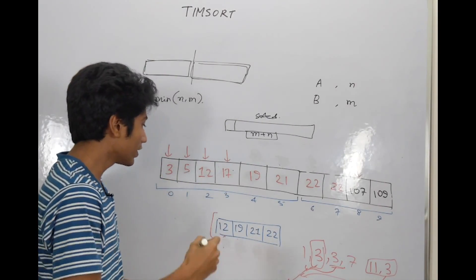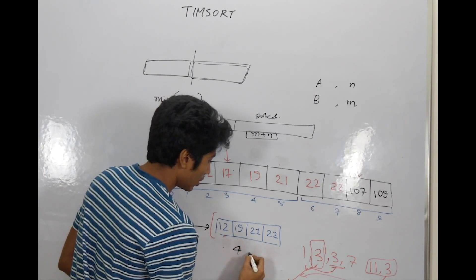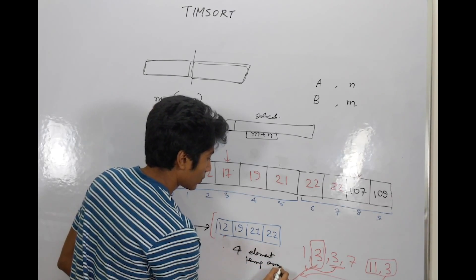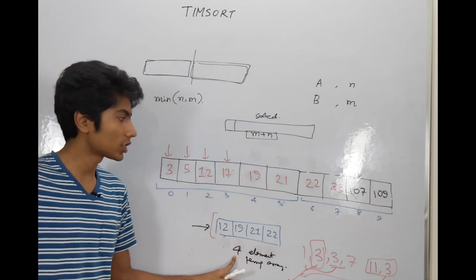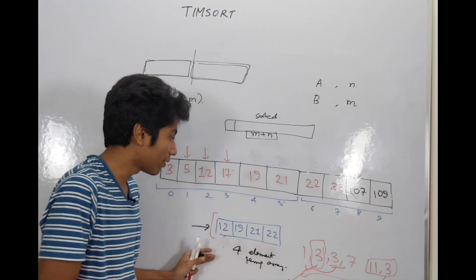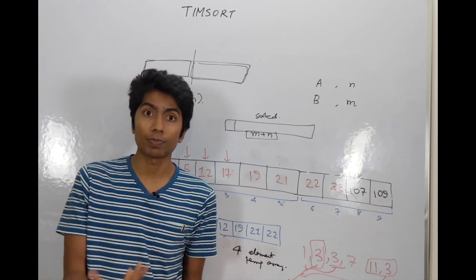But the good news, of course, is that we used just four elements as temporary variables, like four element temp array. And having this, what we can do is we can always take the smaller chunk and have a temporary array of the size of the smaller chunk, ensuring that we are not using a lot of extra space.